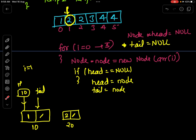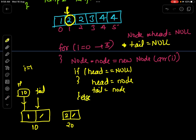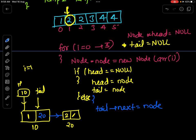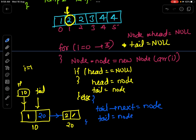Now I check: is head null? No, head is pointing to the first node, so this condition is false. In the else branch: tail.next equals node — so tail's next pointer holds address 20, pointing to the new node. Then I update tail's position: tail equals node. So every time I create a node, I attach it via tail.next and then advance tail. This keeps head unchanged at the start of the list.